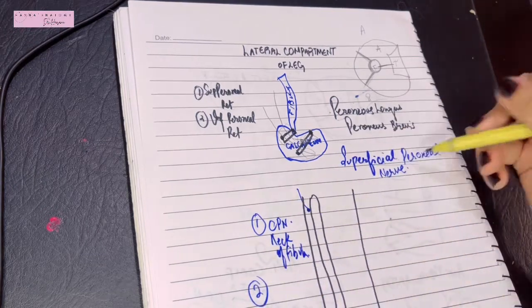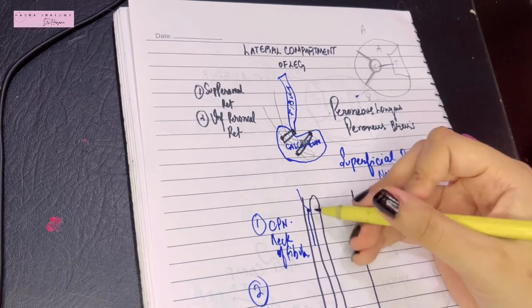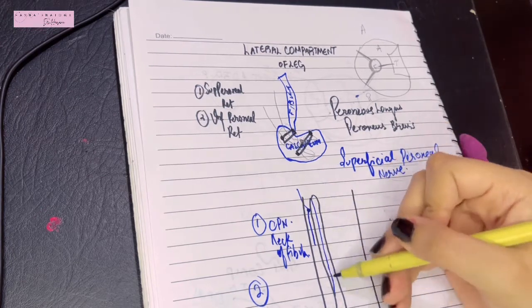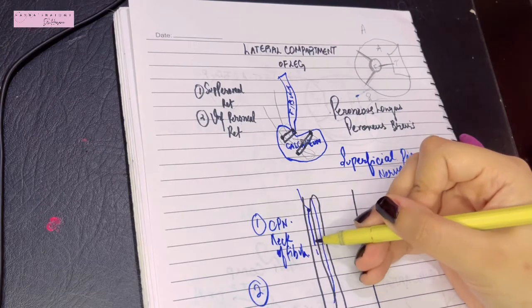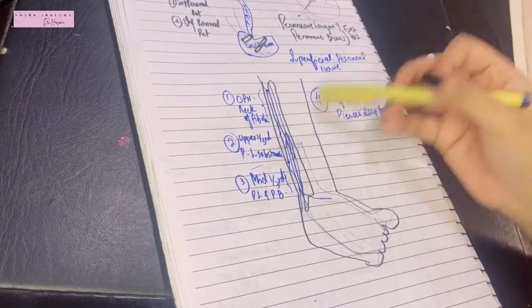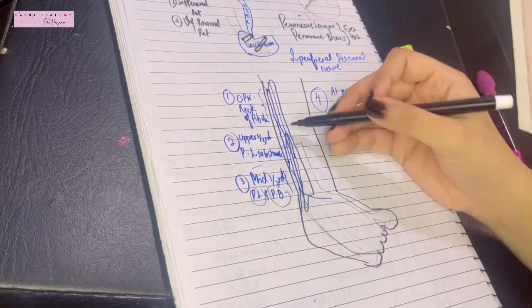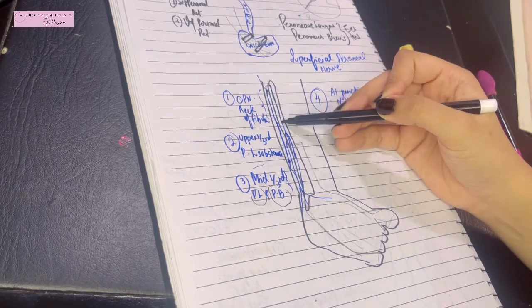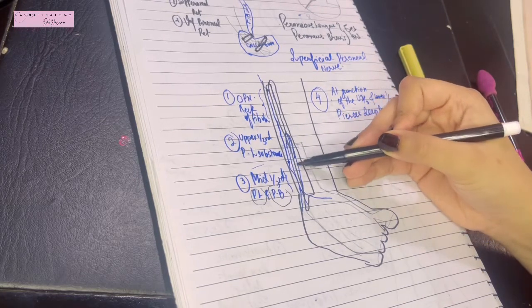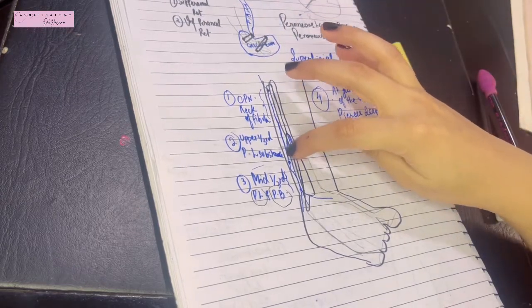The superficial peroneal nerve runs in the substance of the peroneus longus muscle. The peroneus longus muscle originates from the lateral surface in the upper and middle one-third of the fibula, and within its substance runs the superficial peroneal nerve in the upper one-third. In the middle one-third of the leg, the superficial peroneal nerve then runs between the peroneus longus and the peroneus brevis. The peroneus longus originates from the upper and middle one-third while the peroneus brevis originates from the middle and lower one-third of the fibula's lateral surface.